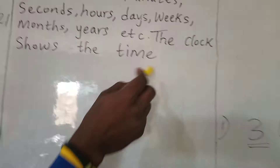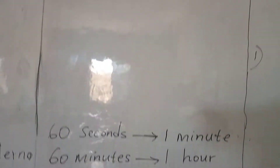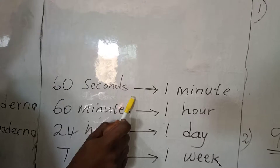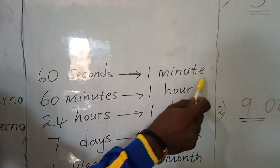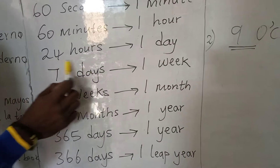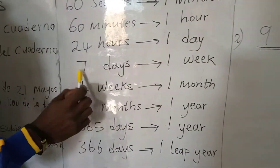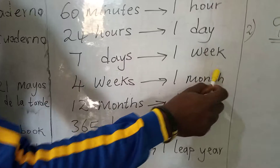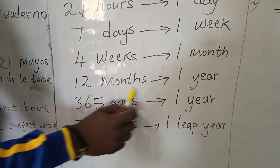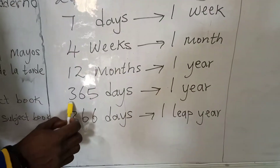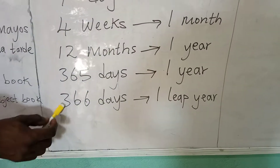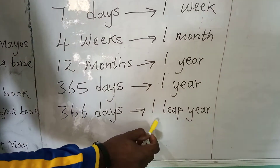Now we are going to look at the clock. Before we do that, notice: 60 seconds will give us 1 minute. 60 minutes will give us 1 hour. 24 hours will give us 1 day. 7 days will give us 1 week. 4 weeks will give us 1 month. 12 months will give us 1 year. 365 days will give us 1 year, and 366 days will give us 1 leap year.